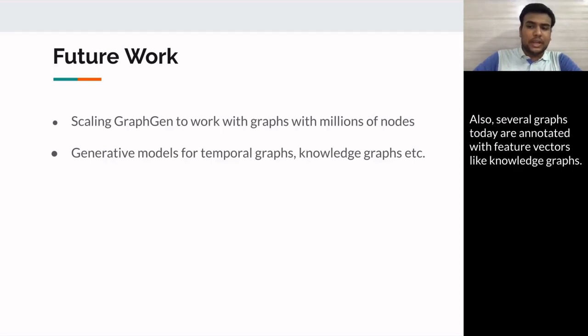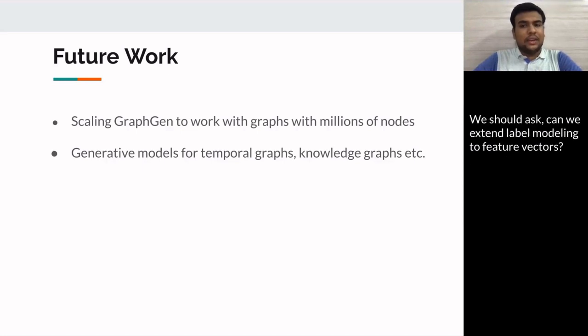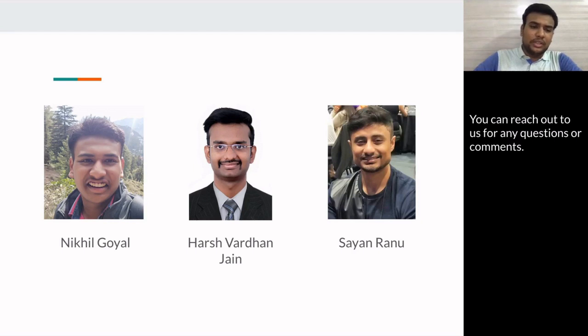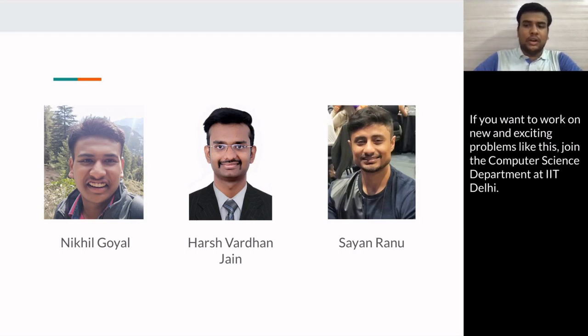Also, several graphs today are annotated with feature vectors like knowledge graphs. We should ask, can we extend label modeling to feature vectors? You can reach out to us for any questions or comments. If you want to work on new and exciting problems like this, join the computer science department at IIT Delhi.